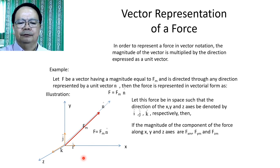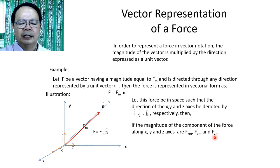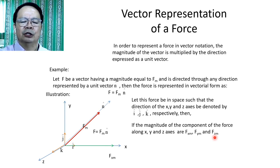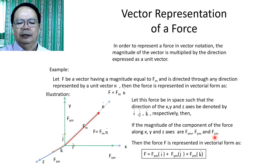The magnitudes of the components of F are expressed as F sub x sub m, F sub y sub m, and F sub z sub m. If this force has this magnitude along the x-component, this magnitude along the y-direction, and this magnitude along the z-direction, then the force F is represented in vectorial form as F equal to F sub x sub m times i plus F sub y sub m times j plus F sub z sub m times k.